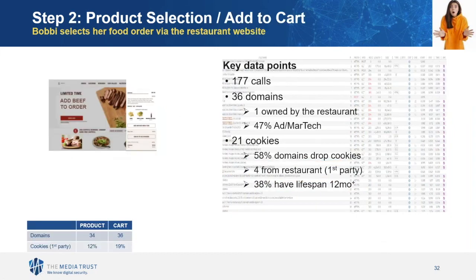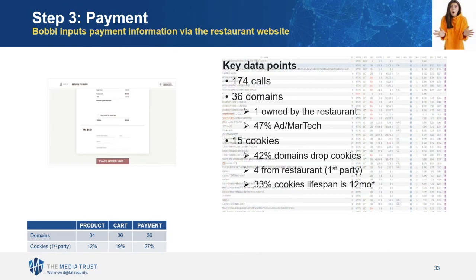Step two: Bobby selects her food via the restaurant website and puts it in her cart. You'll notice an increase in calls, domains, and cookies — 36 domains, 21 cookies, and 19% of the cookies are first party. Step three — the actual payment: Bobby inputs her payment information. Here we see no increase in domains and no increase in cookies. 27% are now first party, which is a good increase. We would expect this because it's a very highly sensitive page and should certainly be the most secure in the user journey.